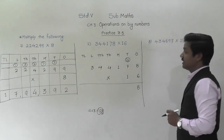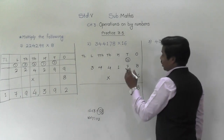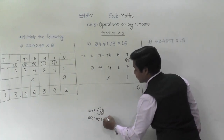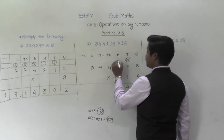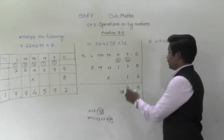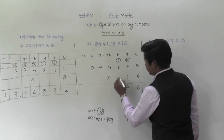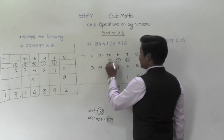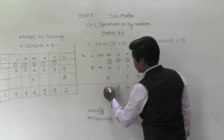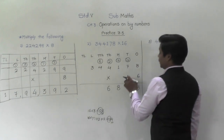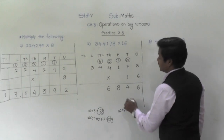16 sevens are 112 plus 12 is 124. 4 will come down and 12 will be carried. Then 16 ones are 16 plus 12 is 28 — 8 will come down, 2 will be carried. 16 fours are 64. 64 plus 2 is 66 — 6 will come down, 6 will be carried. 16 fours are 64 plus 6 is 70 — 0 will come down, 7 will be carried.